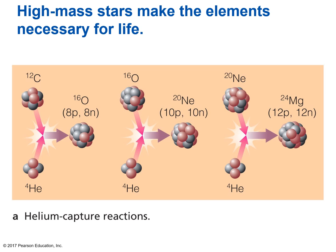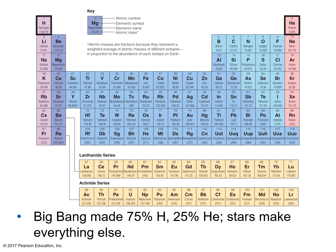High-mass stars make the elements necessary for life. Inside a high-mass star in the supergiant phase, other elements form through helium-capture reactions: carbon and helium combine to become oxygen; oxygen and helium combine to become neon-20; neon and helium combine to become magnesium. This is why Chapter 17 is titled 'Star Stuff' — not just stuff about stars, but that all the atoms around you, including the atoms in your body, are stuff that comes from stars. Hydrogen and helium were made in the Big Bang, creating a universe of about 75% hydrogen and 25% helium. All other elements are made inside stars.